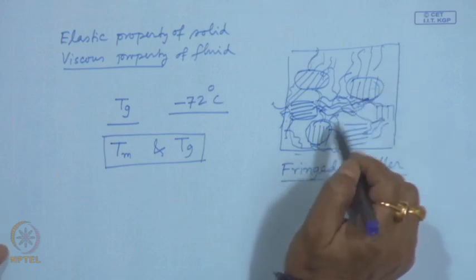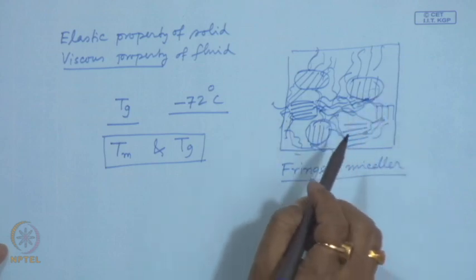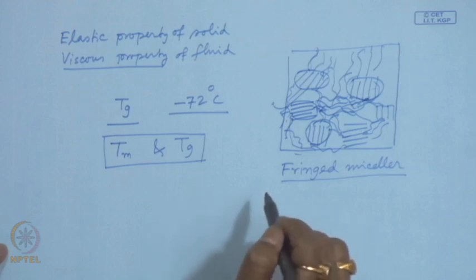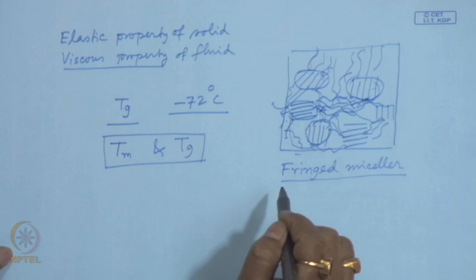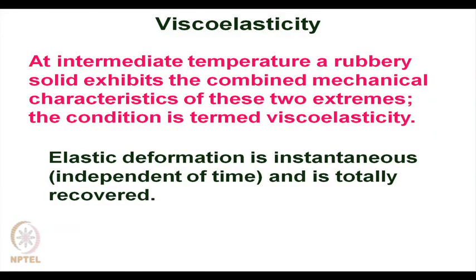Elasticity can be explained with Hooke's law, whereas the amorphous property can be explained with viscosity phenomena. At intermediate temperature, a rubbery solid exhibits the combined mechanical characteristics of both extremes — properties of solid and properties of liquid. Such a condition is termed viscoelasticity. Elastic deformation is instantaneous, is independent of time, and is totally recovered.